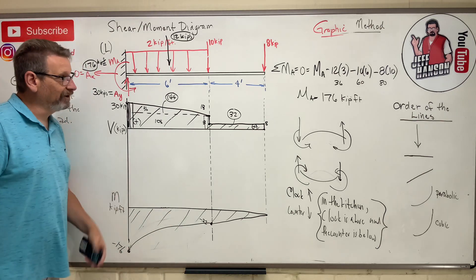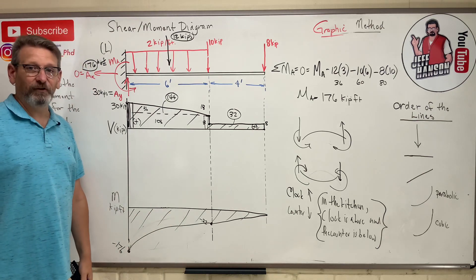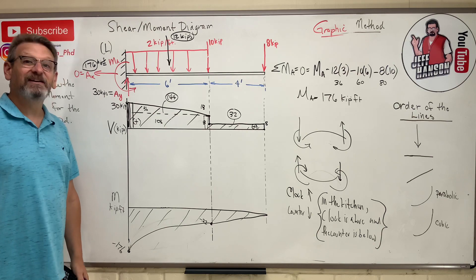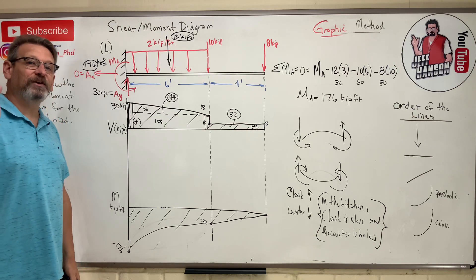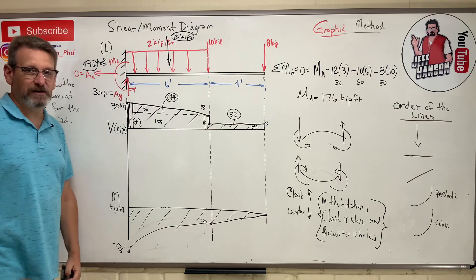So that's a little example of the graphic method — pluses and minuses on the V diagram tell you uphill or downhill slope, and finding the area of the shapes tells you how much you change on your M diagram. Hope it helps — see you on the next video.